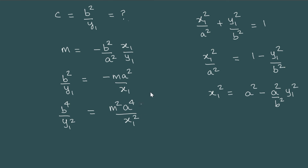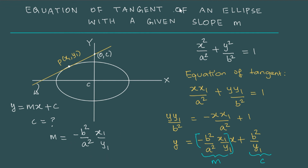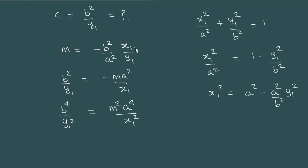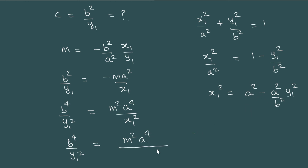Substituting x1² into the equation, we have b⁴/y1² = m²·a⁴ / (a²·(1 − y1²/b²)), which simplifies to b⁴/y1² = m²·a²/(1 − y1²/b²). Sending (1 − y1²/b²) to the left-hand side: b⁴/y1² · (1 − y1²/b²) = m²·a².